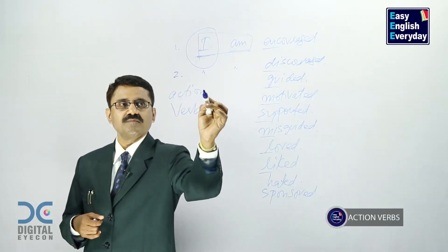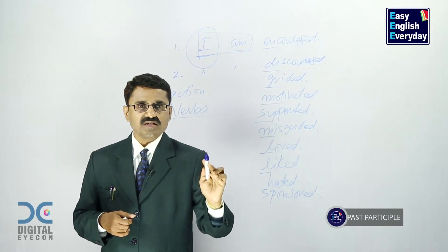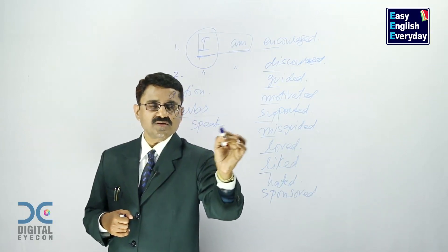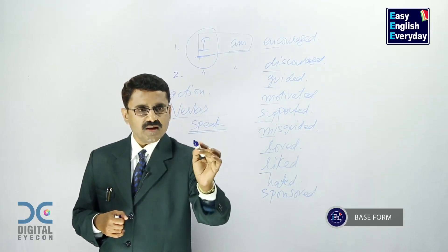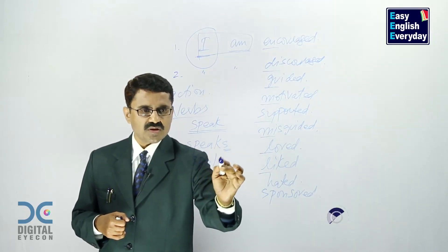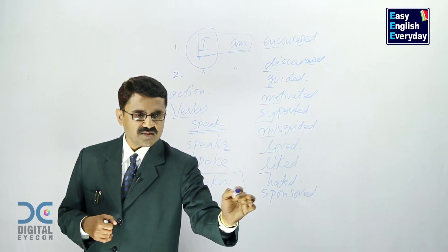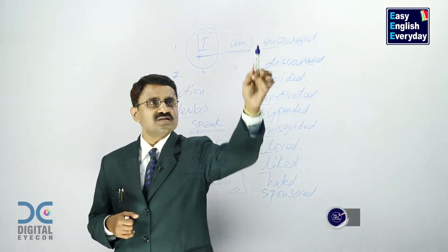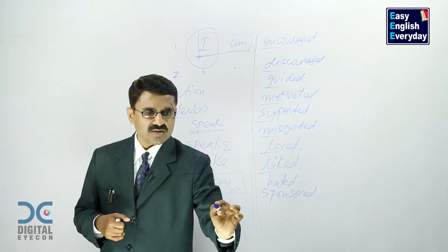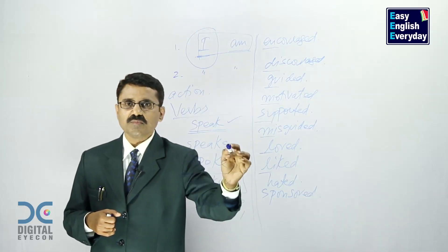These action verbs are in past participle format. What do you mean by past participle format? Take the case of 'speak' — this is called the base form. Then we have 'speaks' — the s form. Then 'spoke' — the past form. And then 'spoken' — we are interested in this part. This is called past participle.